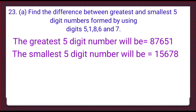To find their difference, we will subtract 15,678 from 87,651. And on subtracting, we will get the answer. You will do it yourself and you will know that the answer is 71,973.